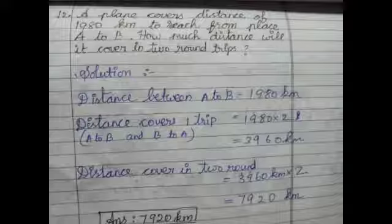So the distance covered for one trip is equal to two times, it is going and coming. So 1980 multiply by 2, 3960 km it covers in one trip. So they are asking the question for two trips. The distance covered in two rounds is equal to 3960 km multiply by 2, which is the answer 7920 km. So the plane covers in two trips, 7920 km.